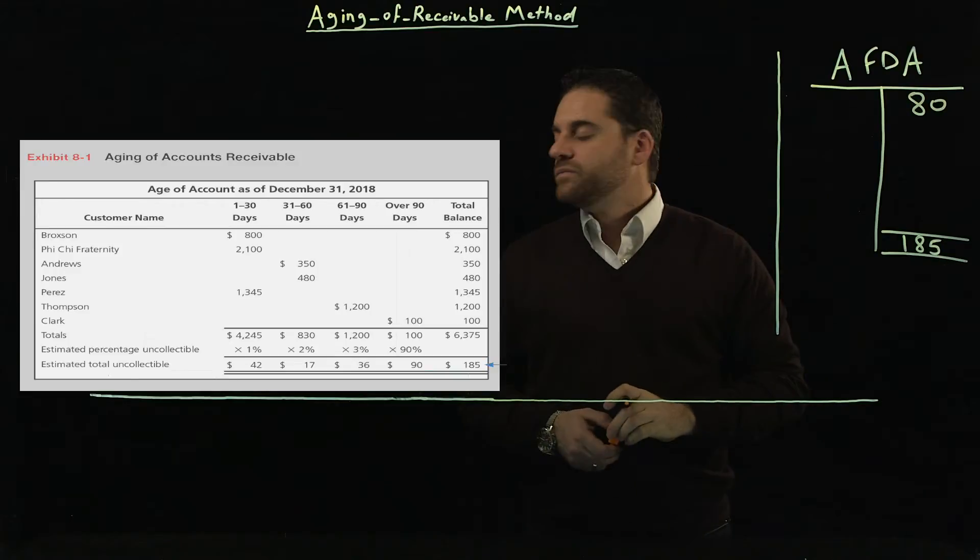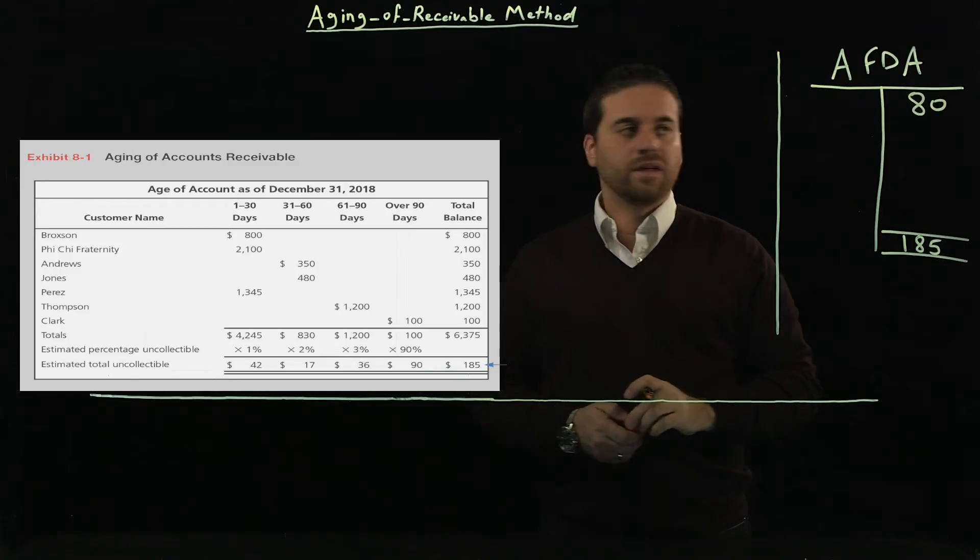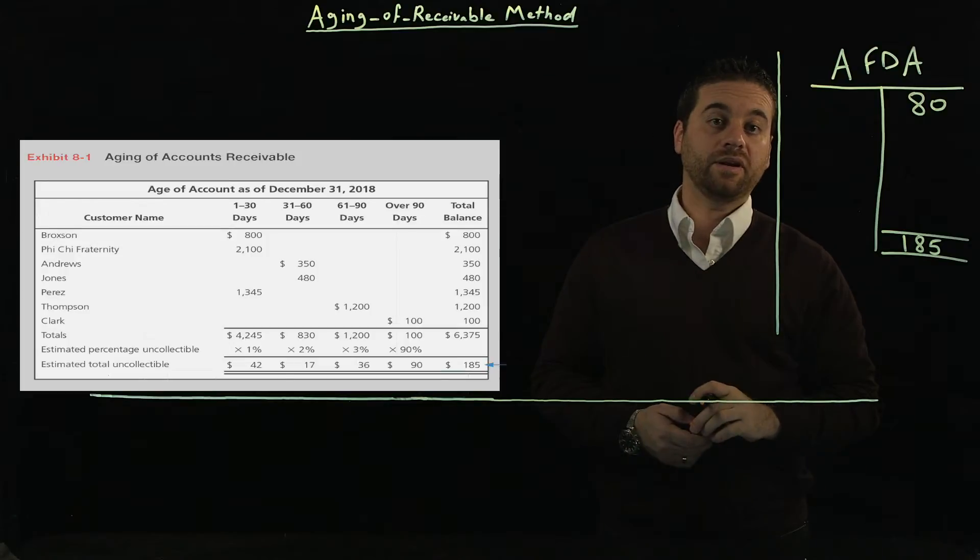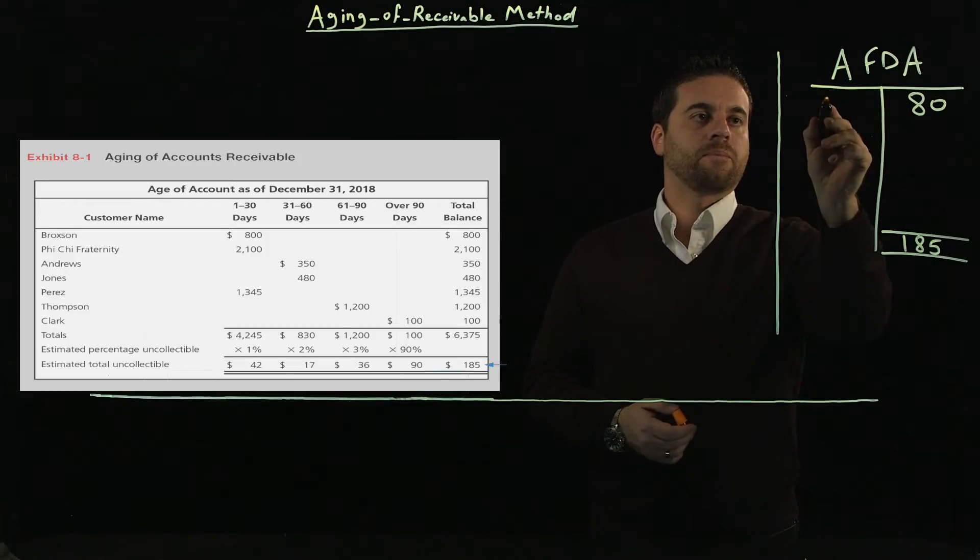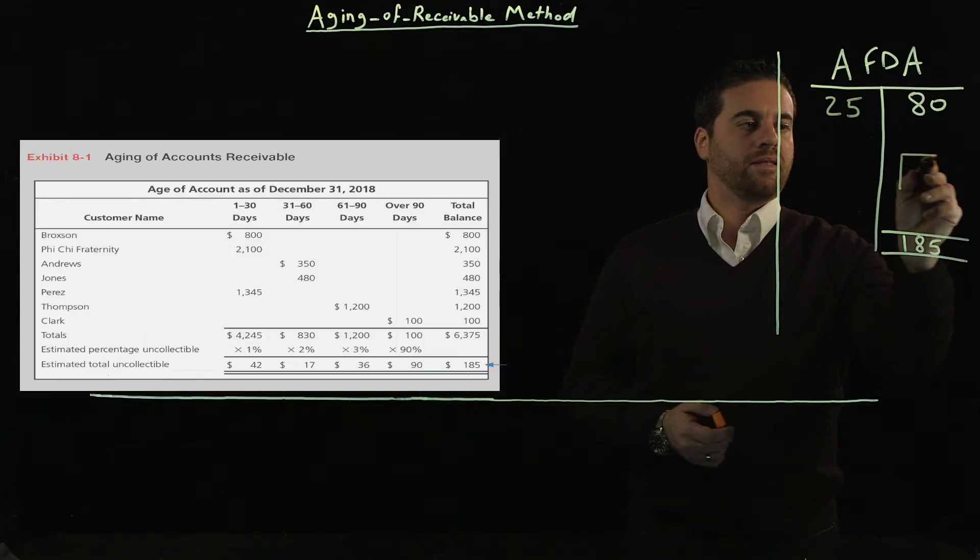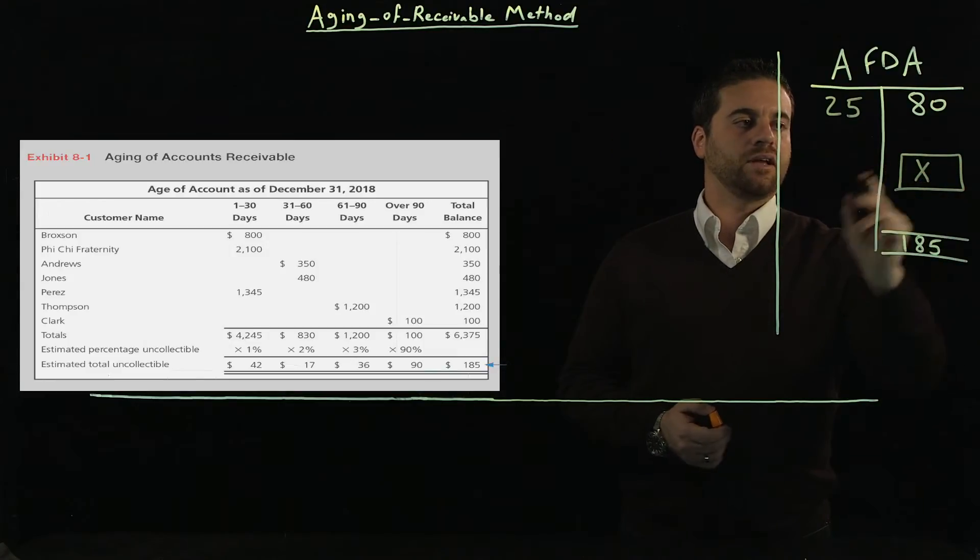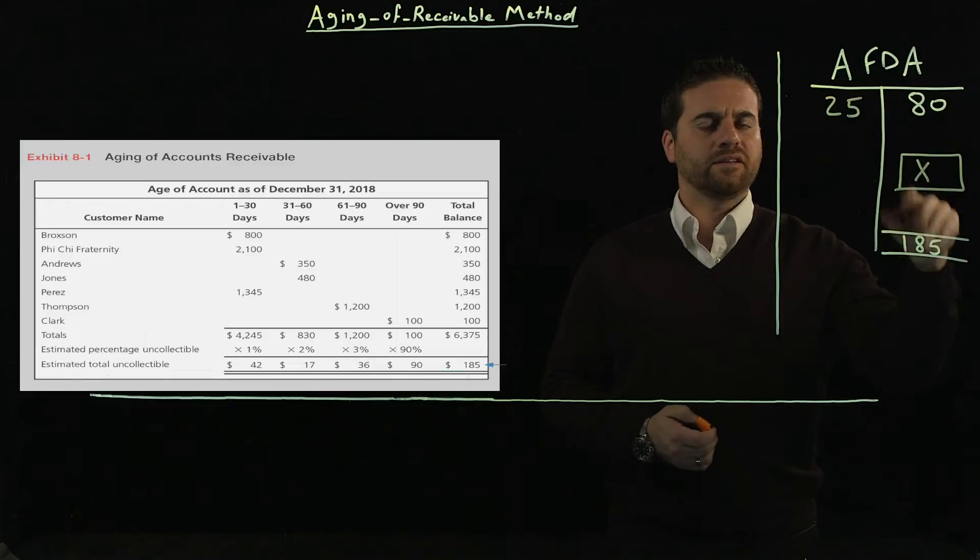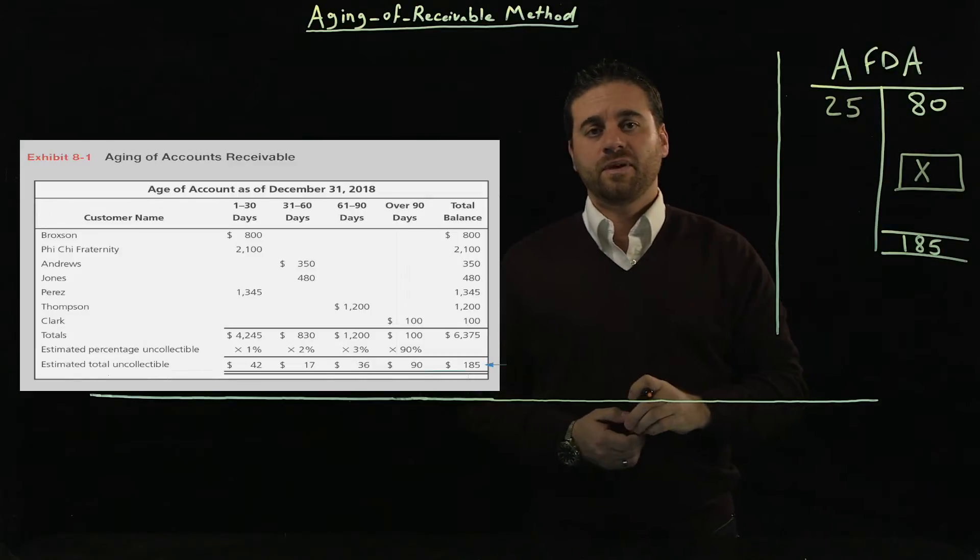But let's assume that there was an amount that has been written off during the period for $25. So we have to do our math and solve for X just like we did in the previous video. So that technique is the same as the previous method.